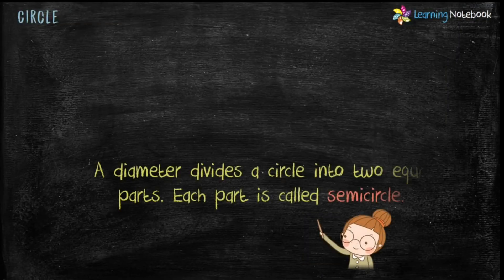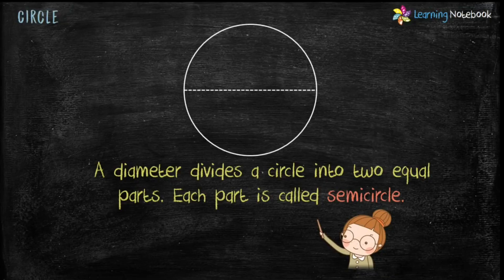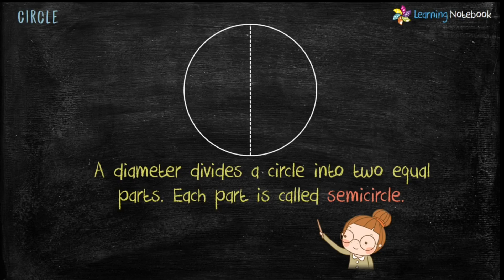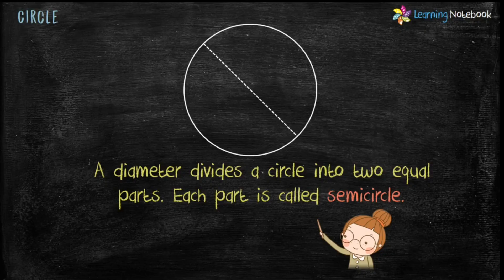The diameter divides a circle into two equal parts. Each part is called semi-circle. So in this figure, the diameter is dividing the circle into two semi-circles. Similarly, a diameter drawn vertically divides the circle into two semi-circles. In the same way, diameters drawn as slanting lines divide the circle into two semi-circles.